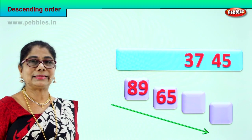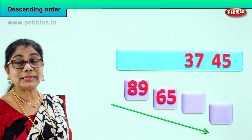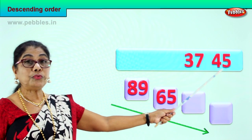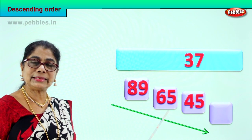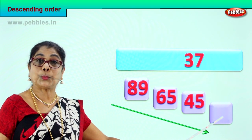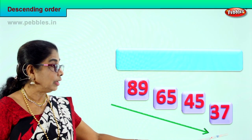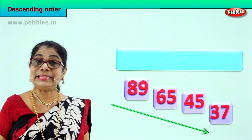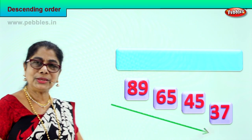We have eight tens and six tens arranged. Now we have two more left — three tens and four tens. The next big number after six tens is four tens, five ones. So we take four tens, five ones and put it here. We have eight tens, six tens, four tens — and now three tens, seven ones is the smallest of the four, so we put it right down. We have arranged the four numbers in proper descending order: eight tens, six tens, four tens, three tens — biggest to smallest.